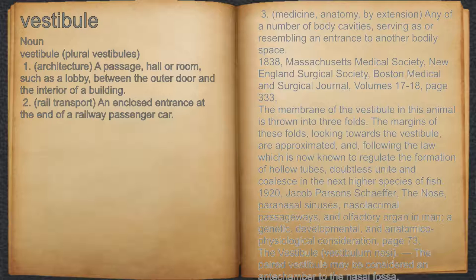2001, René Malek, Cleft Lip and Palate: Lesions, Pathophysiology and Primary Treatment, p. 79: "The incision of the mucosa over the premaxilla is traced a millimetre or two from the furrow that marks the bottom of the barely defined vestibule."